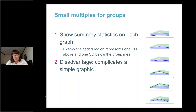If you want to use small multiples to show group data, one option is to show summary statistics on each graph. In the example here, the shaded region for both the green and blue group represents one standard deviation above and below the mean for each group, and a line on each small multiple graph shows the data for one participant within that group. The advantage is that we can see summary statistics, however the disadvantage is that it complicates what's intended to be a very simple graph.